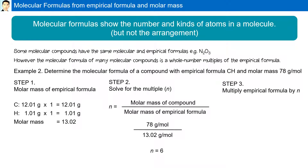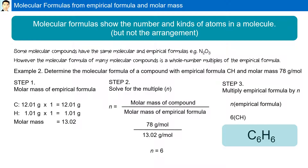The third step is to multiply the empirical formula by N. We have 6 times CH, giving a final molecular formula of C6H6. That is the molecular formula of a substance with an empirical formula of CH and a molar mass of 78 grams per mole.